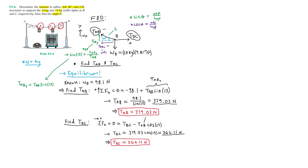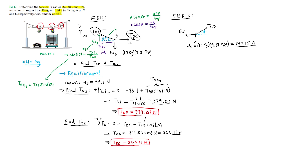The final tension to find is TCD, so we now need a free body diagram at point C. At point C we have tension TCD acting at angle theta, tension TBC acting to the left, and the weight of traffic light C, WC, equal to 15 kilograms times 9.81 meters per second squared, which equals 147.15 newtons.